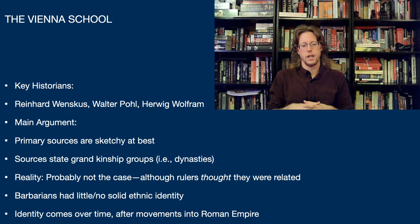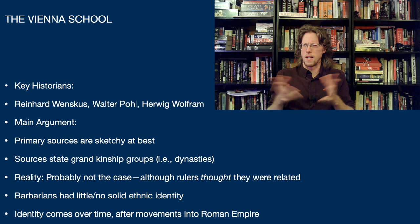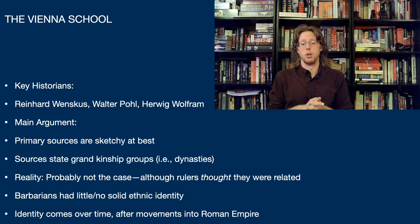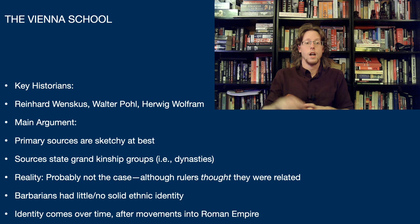Because a lot of these sources are written with a very specific aim in mind, there are some kernels of truth in them, but we have to take them for what they are — largely propaganda pieces. The primary sources are, at best, sketchy. The reality is that these grand kinship groups probably were not the case, although rulers thought they were related. According to the Vienna School, the key point is that people thought they were related, and because of that, the barbarians had little or no solid ethnic identity. Basically, the ethnic identity — this idea of being a Goth, a Hun, a Frank — comes after people move into the Roman Empire.